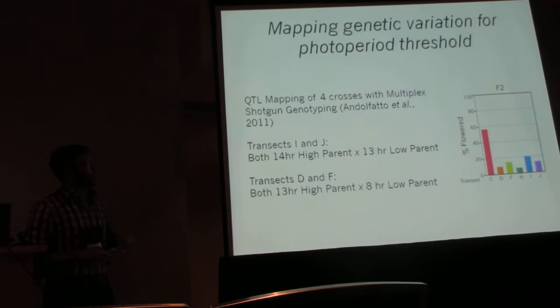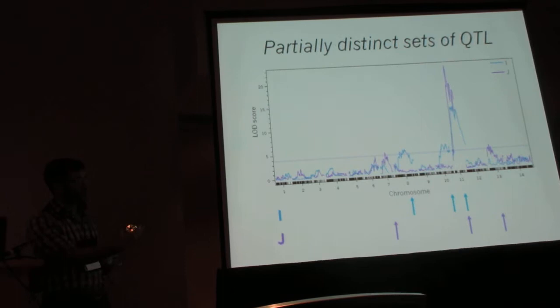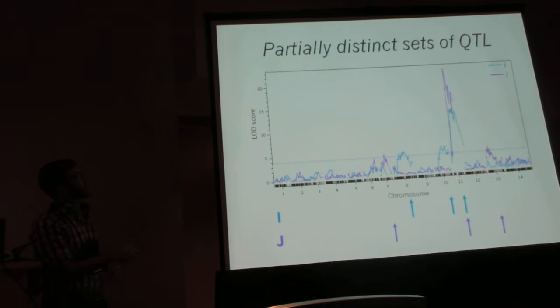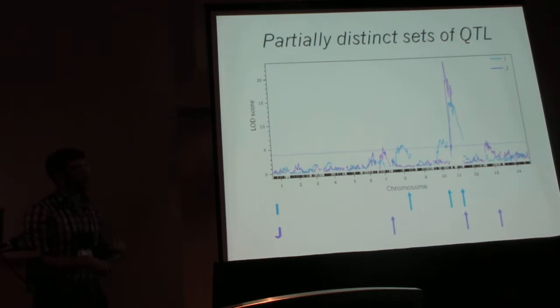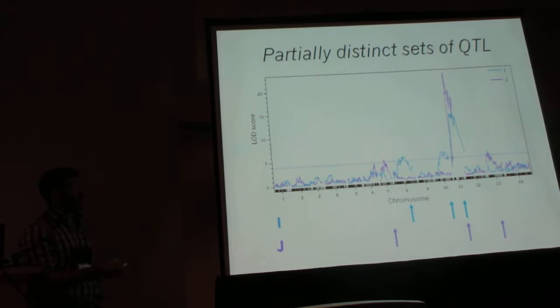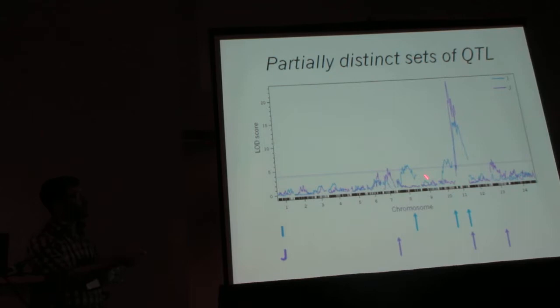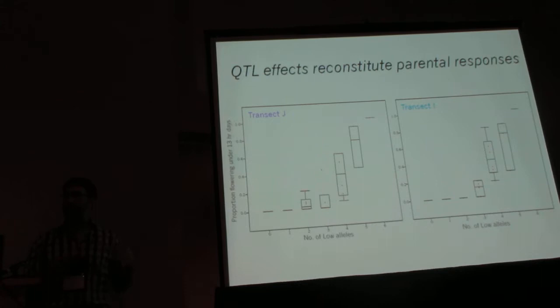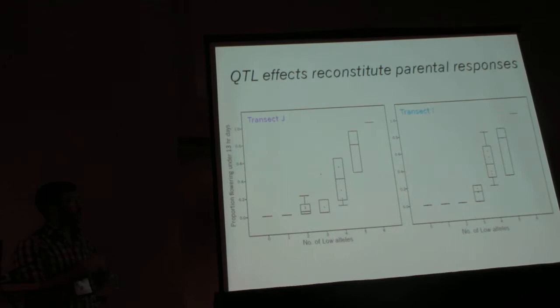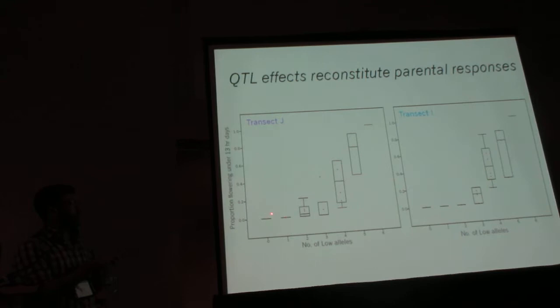I'll show the QTL mapping results for the Cascades only for the sake of time. On the x-axis are all the markers genotyped on the 14 chromosomes of the Mimulus genome, and on the y-axis are the associations between the markers and whether or not the plants flower in this condition. Genome-wide significance is the dotted line. In each of the two Cascades crosses, just three QTLs show up as regions of the genome responsible for this variation, and one of these QTLs is shared between the two crosses. These three loci in each cross capture all of the divergence between the parents, going from 0% to 100% flowering as we go from all-high to all-low alleles.